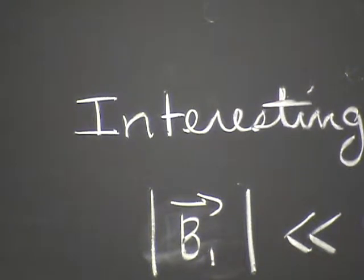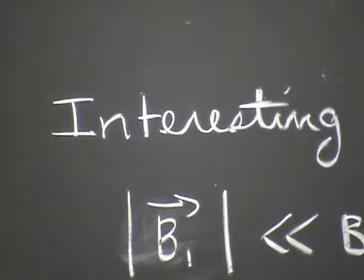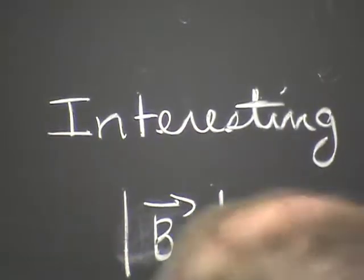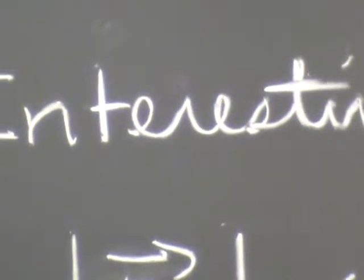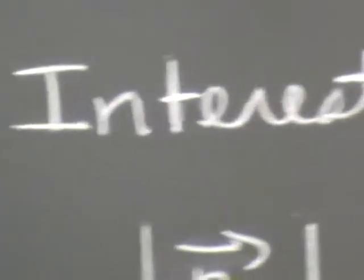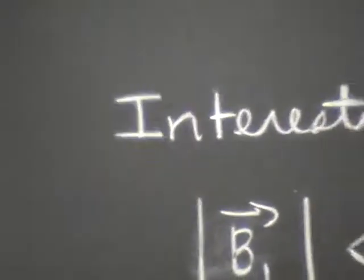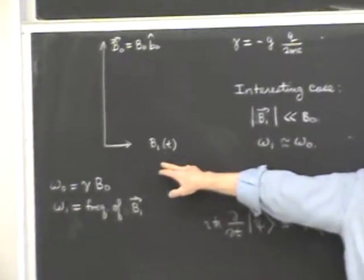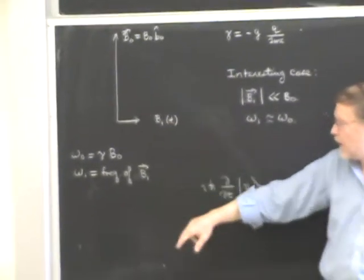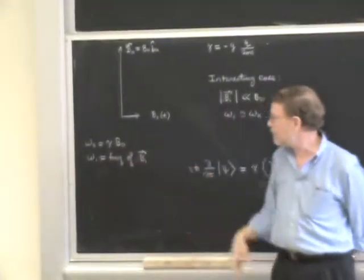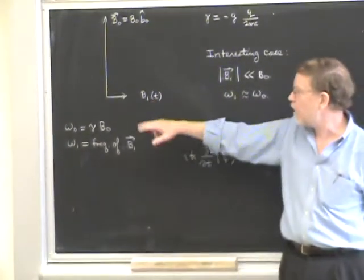Continuing from last time, we're talking about magnetic resonance experiments. These involve a uniform magnetic field called B0, pointing in some direction B0-hat, constant in time and space, and assumed to be a large field. Then we have a time-dependent field B1, placed in an orthogonal direction with a periodic time dependence at frequency omega-1, which is the frequency of the small field.